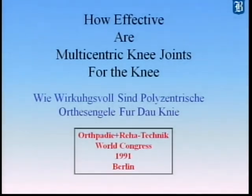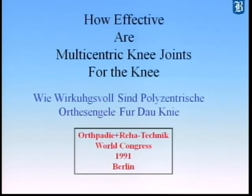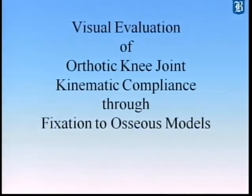To give you some impact of how critical this can be — this is a paper I gave in 1991 at the Ortho Rehab meeting at the World Congress in Berlin: 'How Effective are Multicentric Joints for the Knee.' My point here is that because multicentric joints have a particular type of arthrokinematics, misalignment of the orthotic instant center of rotation compared to the anatomic instant center of rotation is enhanced by misalignment. This was a method to visualize the evaluation of orthotic knee joints with kinematic compliance through fixation of the orthotic knee joints to osseous models.